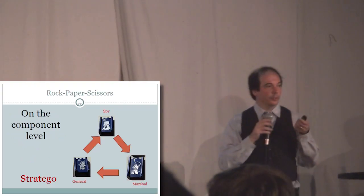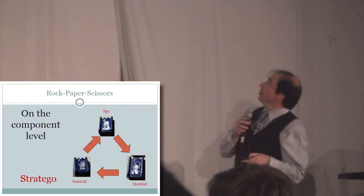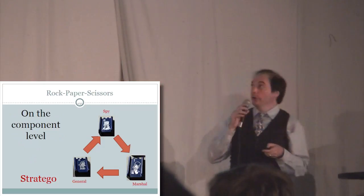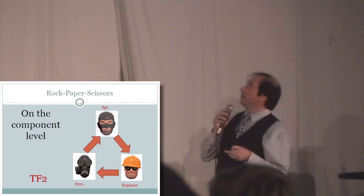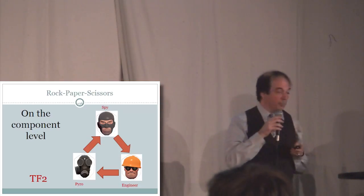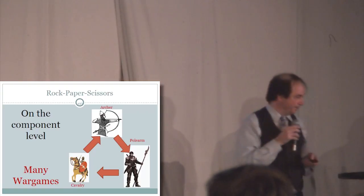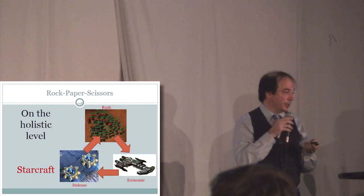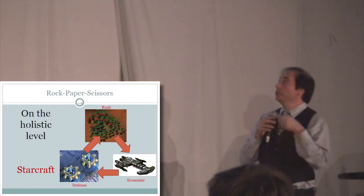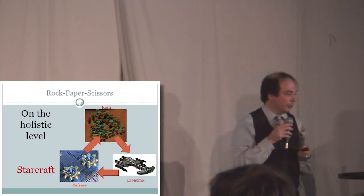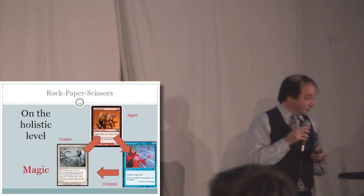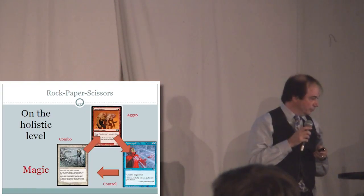Another technique that's commonly used is rock-paper-scissors. Rock-paper-scissors is a really excellent structure to keep in mind when balancing a game. It appears throughout games in one form or another. On the component level, you'll see rock-paper-scissors. For instance, in Stratego, you've got the spy beating the marshal beating the general. On TF2, you might see the spy beating the engineer, and the engineer beating the pyro, and the pyro beating the spy. Many war games have a rock-paper-scissors structure. On the holistic level, you also see it. For example, in StarCraft, if you use the tactic of rushing, you will beat somebody who goes economic. And if you use the economic strategy, you'll beat somebody who's hunkered down in defense. And if you hunker down in defense, you'll beat somebody who's rushing.